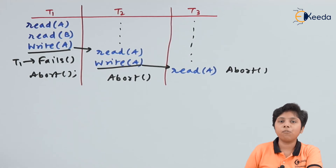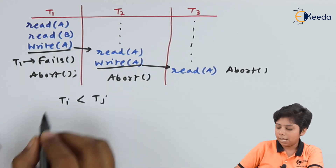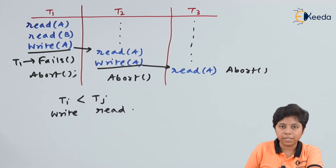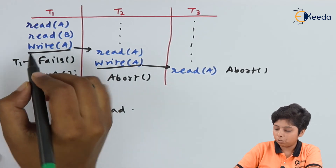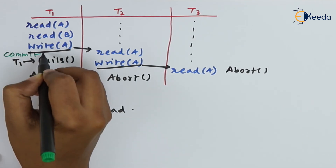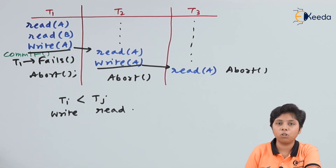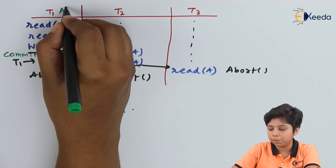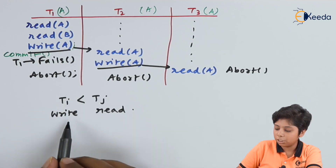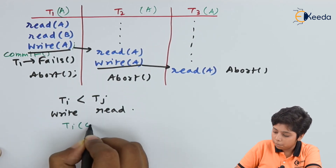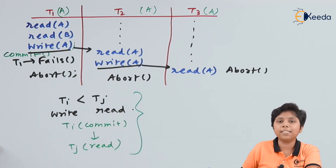Cascading rollback means that if Ti precedes Tj and Ti has a write followed by Tj's read, then Ti's commit must appear before Tj's read. If Ti committed after its write, then the data has been saved and T2 and T3 need not be rolled back because T1 has an updated committed value of A which both T2 and T3 are using. So Ti commit will be followed by Tj's read, and such schedules are called cascade-less schedules.